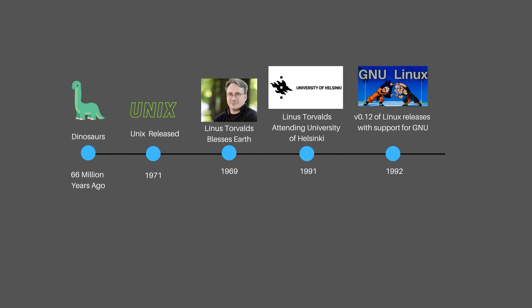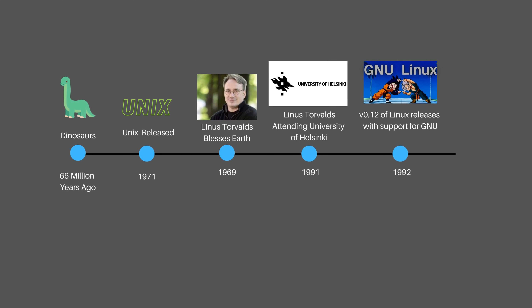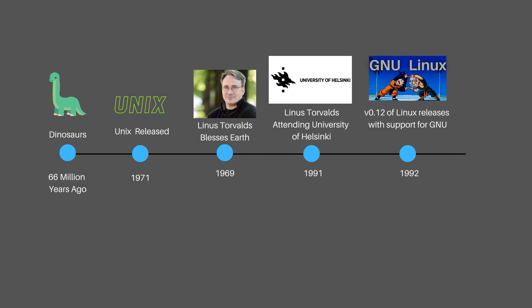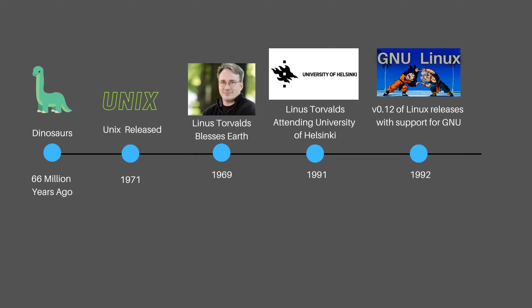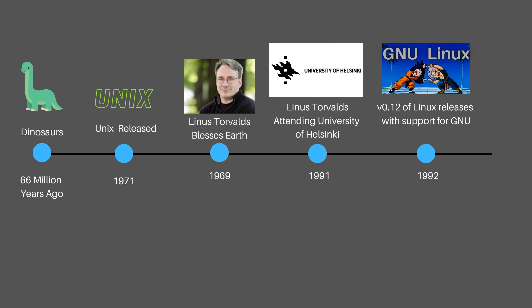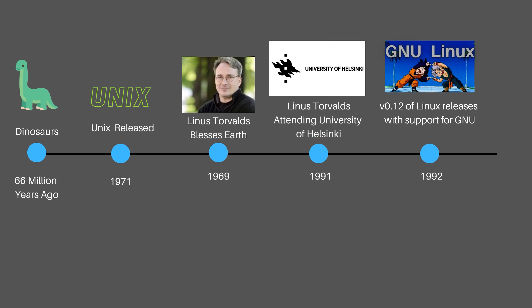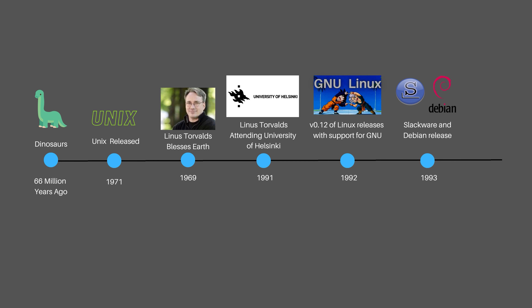So in 1992, Linus Torvalds released version 0.12 of the Linux kernel, and it included a file system, text editor, and support for the GNU compiler from the GNU project. As time went on, communities decided to take the Linux kernel and begin developing upon it. Slackware was created in 1993, Debian was created in 1993, and Red Hat Linux was created in 1994.